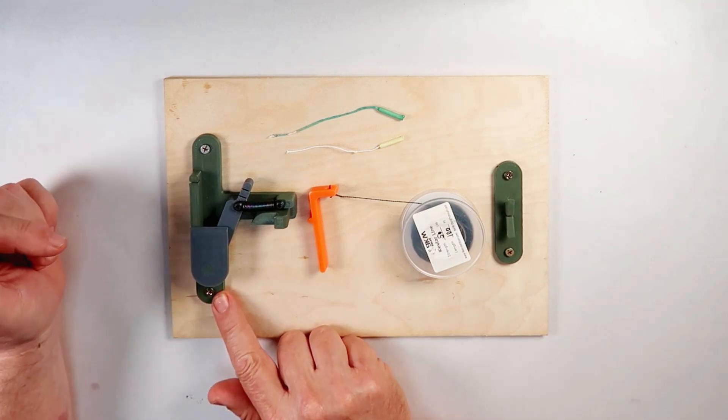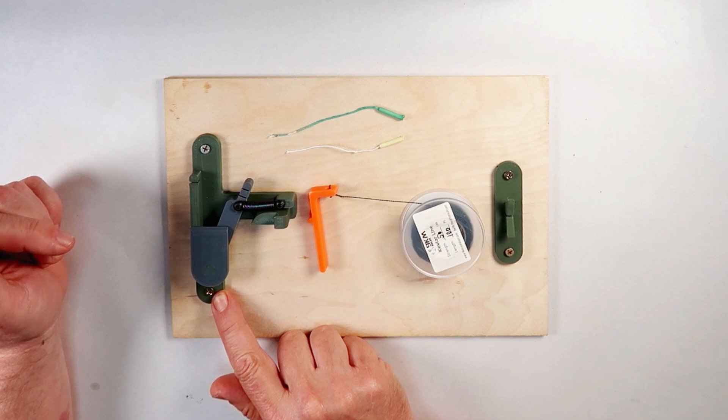To set the tripwire, first anchor the mechanism to a tree, post or similar structure, with screws, zip tie or tape.